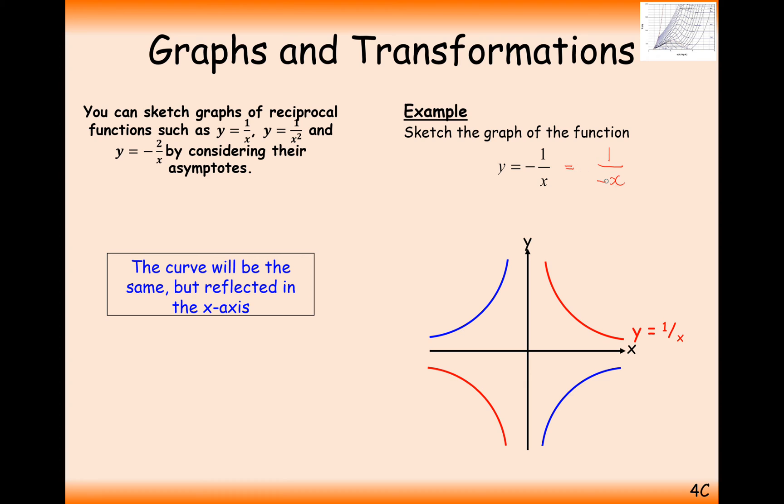You can effectively factorise out the minus to the front and leave it there. So minus 1 over x is the same graph as 1 over minus x.